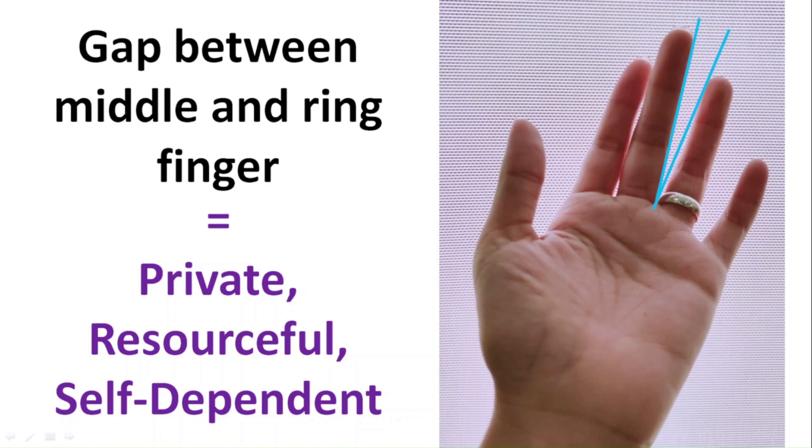The second gap is between the middle and ring finger. If you have a gap here, you're probably pretty private, resourceful and self-dependent. If you don't have this gap, then you like to be in the company of your loved ones.